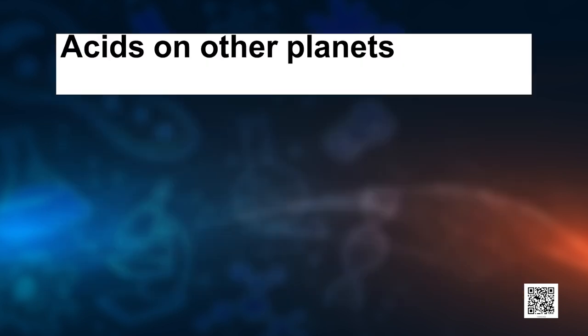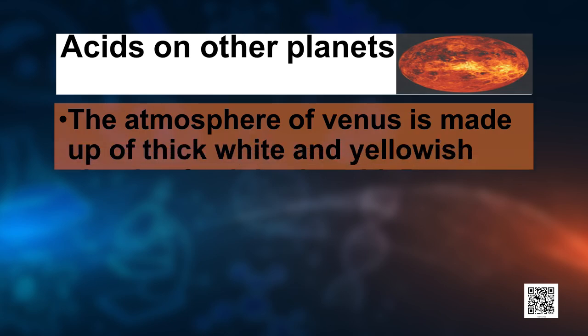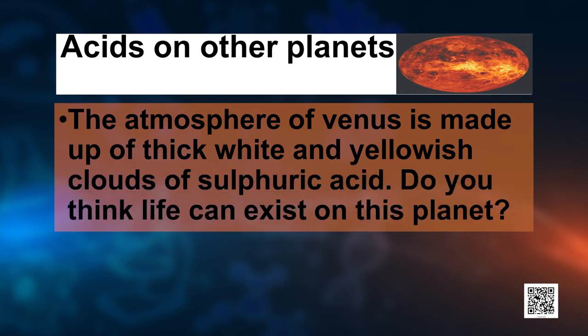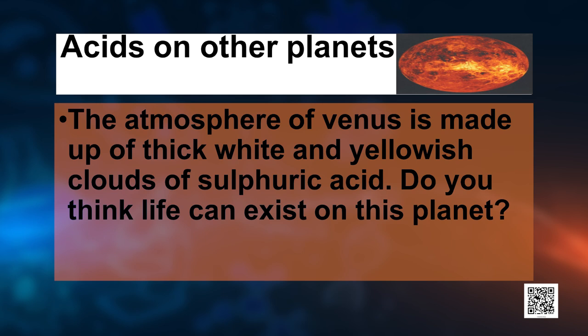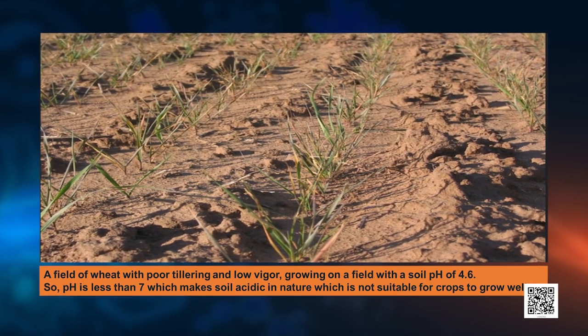Is there acid on other planets? The atmosphere of Venus is made up of a thick white and yellowish cloud of sulphuric acid. With this thick cloud of sulphuric acid, do you think life can exist on that planet? Do you remember — sulphuric acid is very toxic. The farmers also have to take care of the pH.